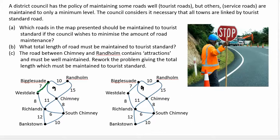The next shortest is the 8 — clearly the shortest here — then the 6 and the 8. In order to get to Rand, I have to include the length 10, and the shortest of the distances remaining from South Chimney to Bankstown is the 10 kilometre road. So the length of road required, adding those up: 10, 7, 8, 6, 8, and 10, gives me a total of 49 kilometres.